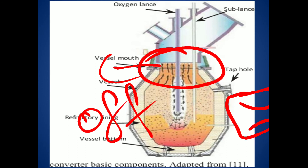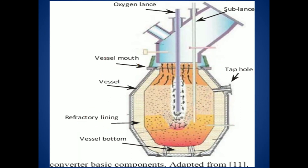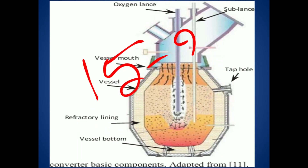When the flame goes off, we proceed to pouring — rotating the converter to remove the slag and steel. The total process is completed within 15 to 25 minutes.